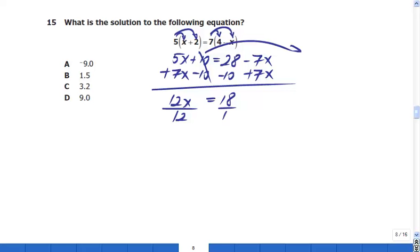Divide everything by x's coefficient, which is 12. I have x equals, now this one I can simplify by 6. 6 goes in 18 three times, 6 goes in 12 two times, and obviously this is going to be 1.5. Your x is 1.5.